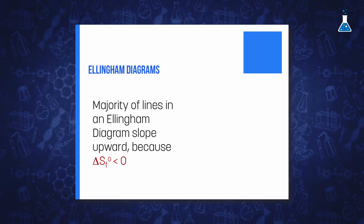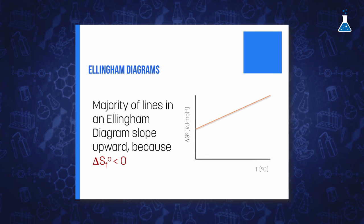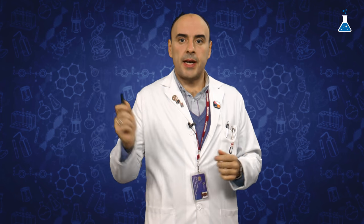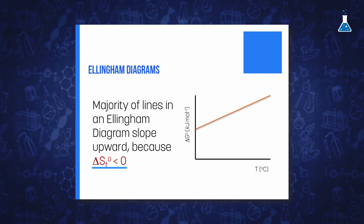The majority of lines represented in the Ellingham diagram slope upwards. That means they have positive slopes because the variation of standard entropy in the formation reaction of an oxide is negative.